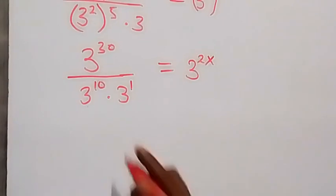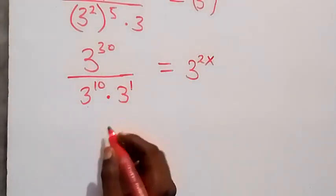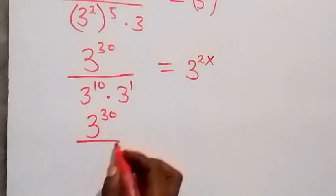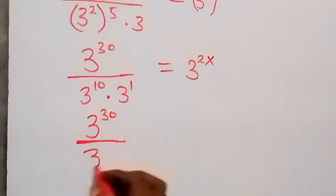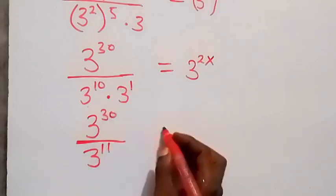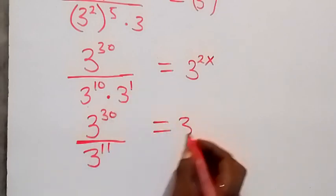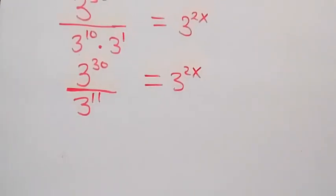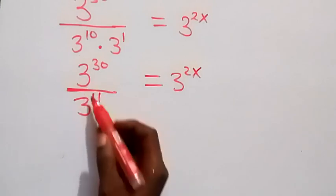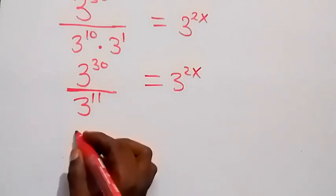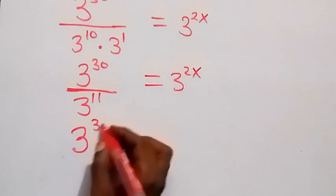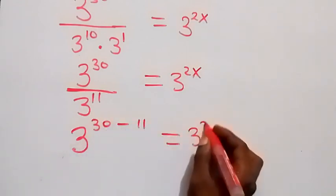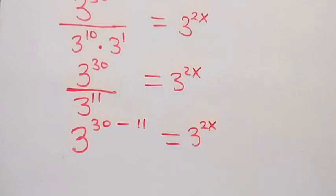From here we can add the powers in the denominator, and this will be 3 raised to power 30 divided by 3 raised to power 10 plus 1, which is 11, then equals 3 raised to power 2x. Then applying the law of indices — same base dividing means we subtract the powers — so this becomes 3 raised to power 30 minus 11 equals 3 raised to power 2x.